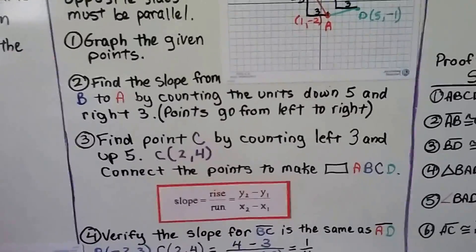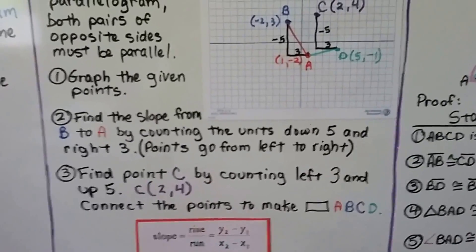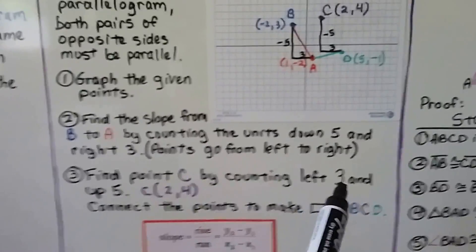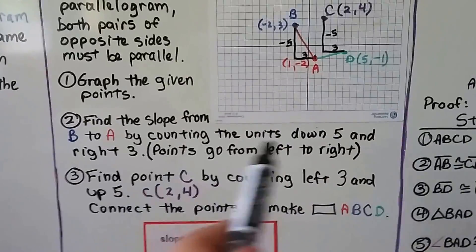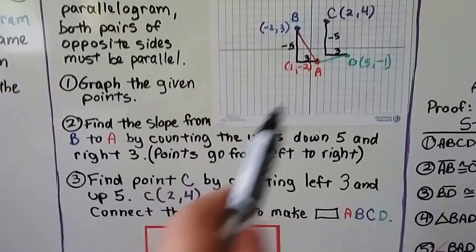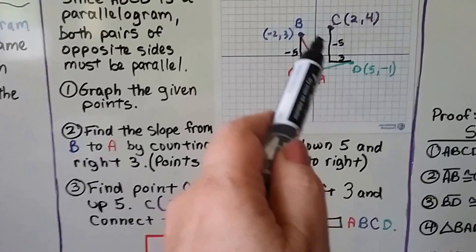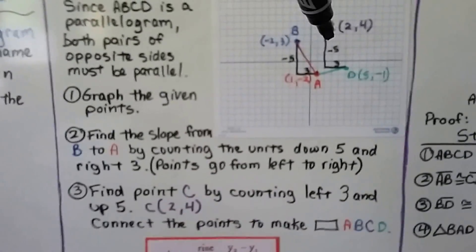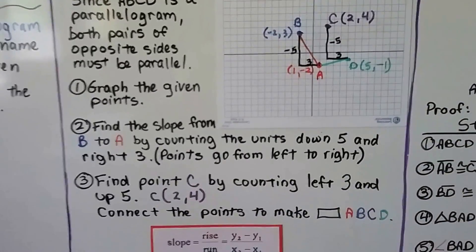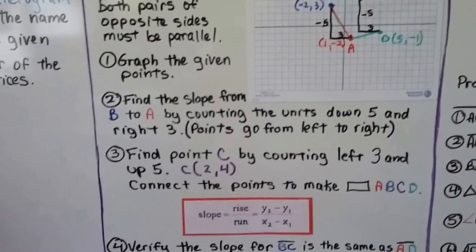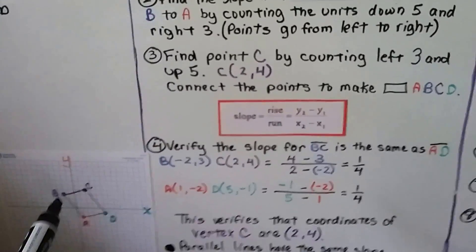And we find point C by going the opposite direction. We went right 3, so now we're going to go left 3: 1, 2, 3. And we went down 5, now we're going to go up 5: 1, 2, 3, 4, 5. And that puts point C at 2 for x and 4 for y. And we connect the points to make parallelogram ABCD.